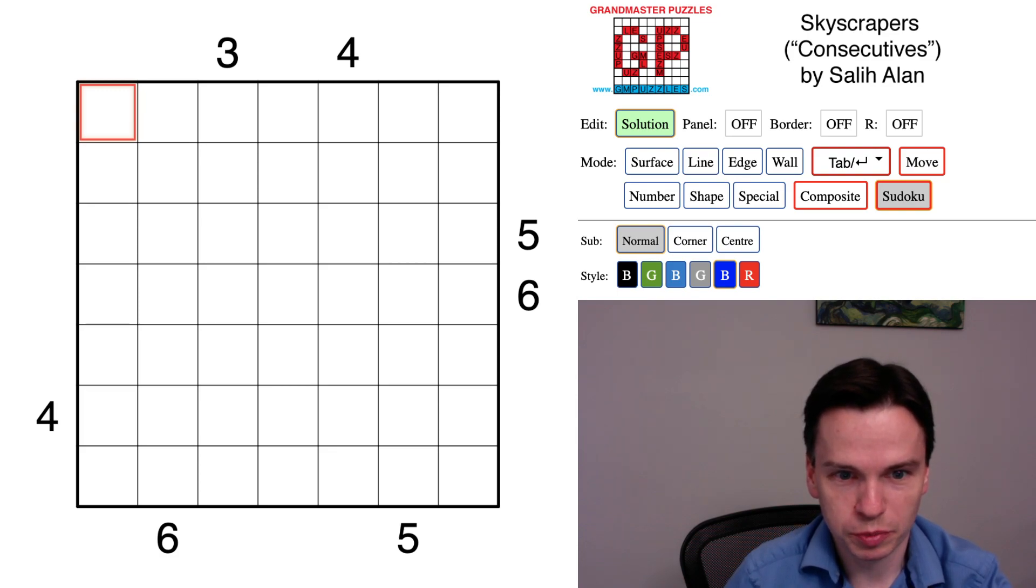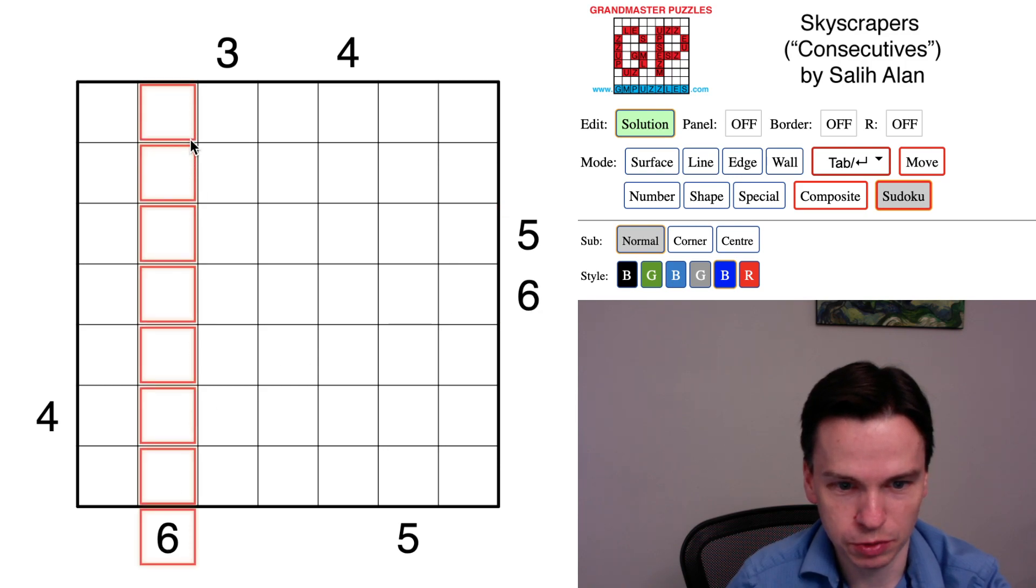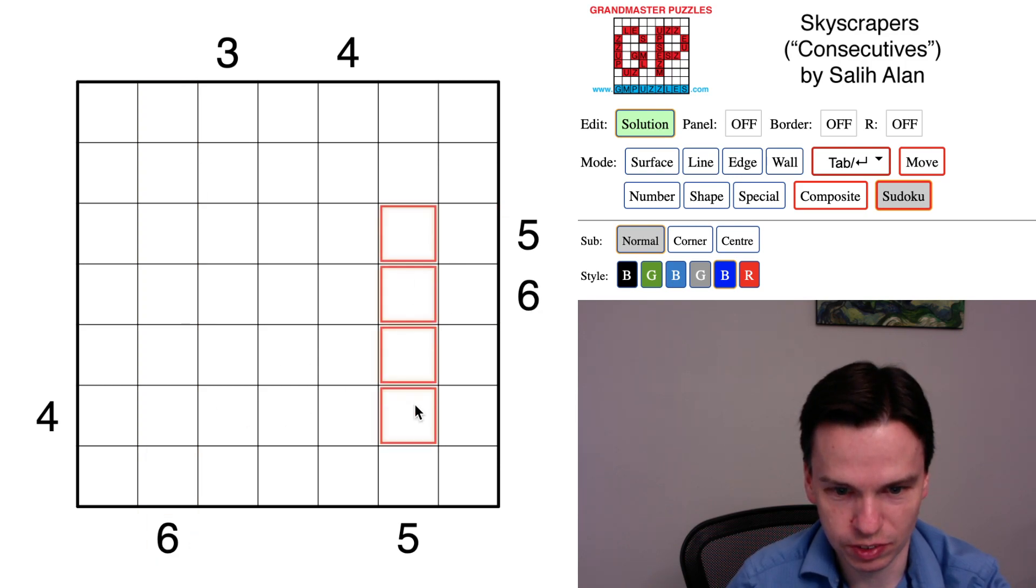We're here to solve this skyscrapers puzzle by Sali Alon with a consecutives theme. You can see three, four, five, six coming around the top edge and another five, six pair down here. These really big clues look like they're going to interact in a pretty key way with a big clue like the six and even this big clue like a five. So let's start by looking at those.